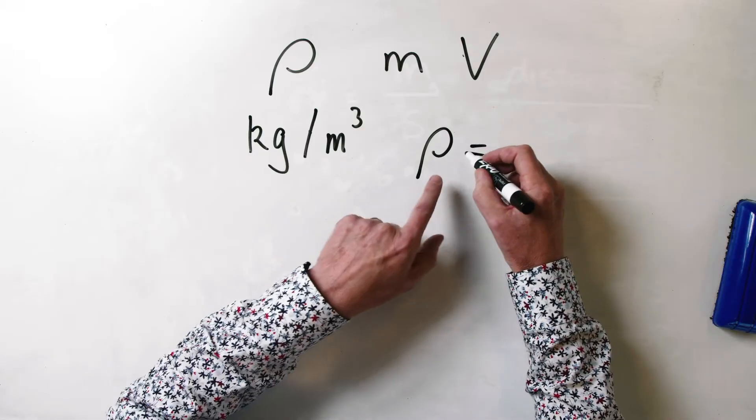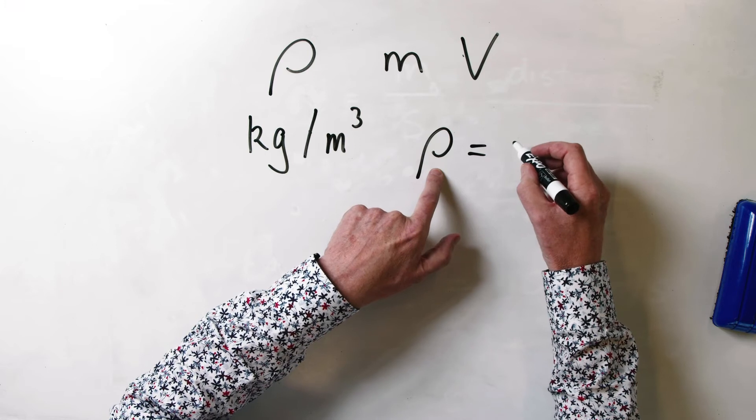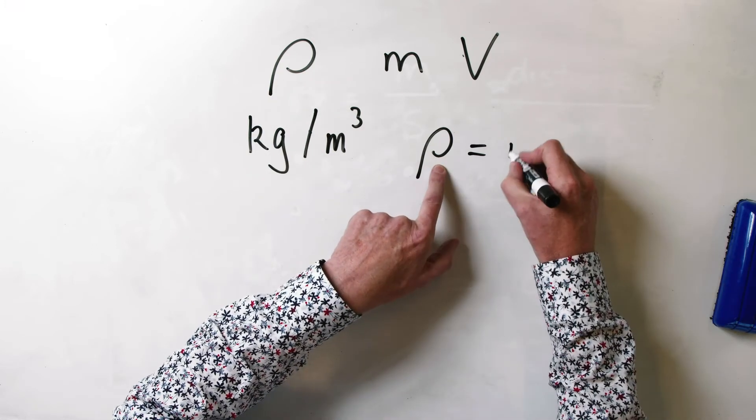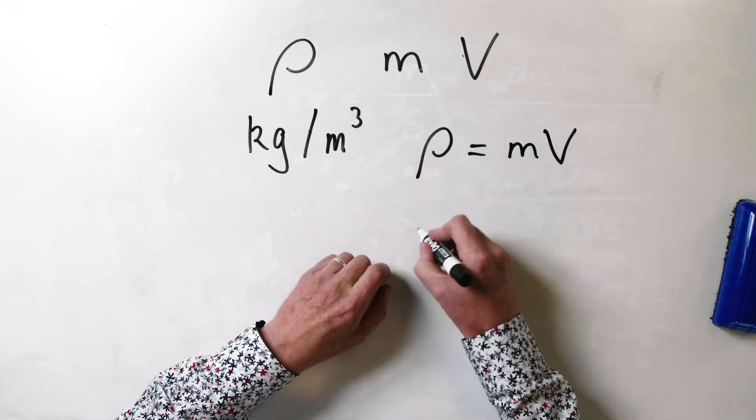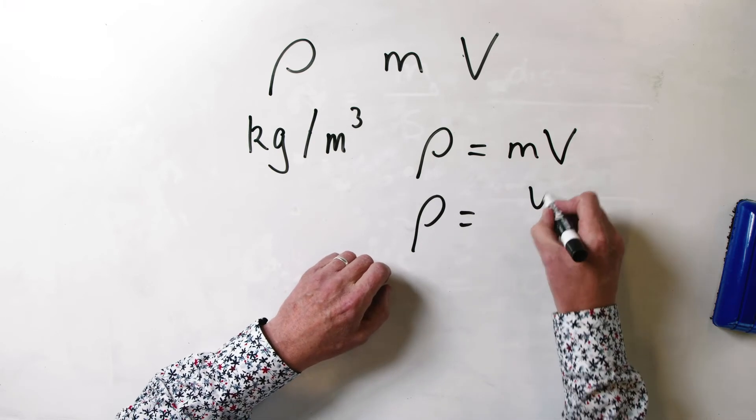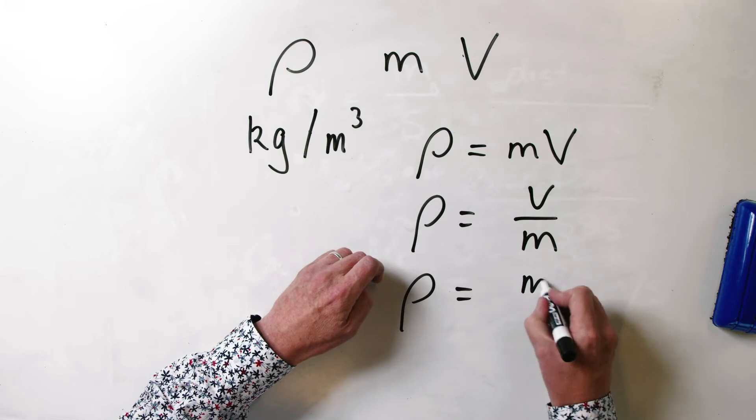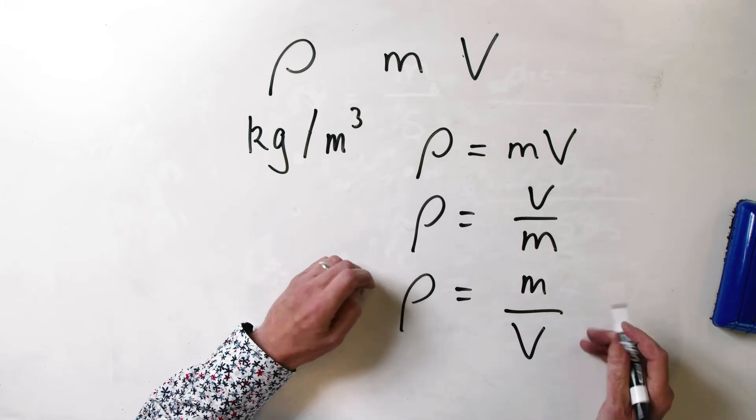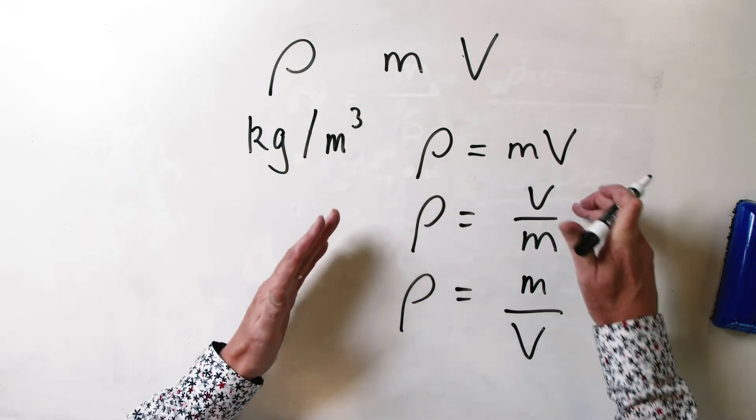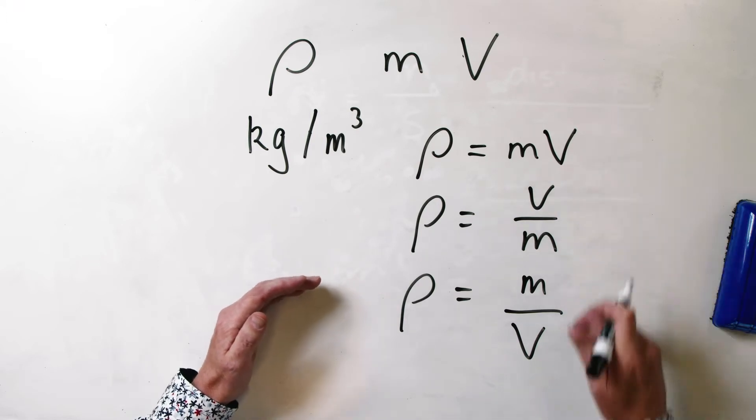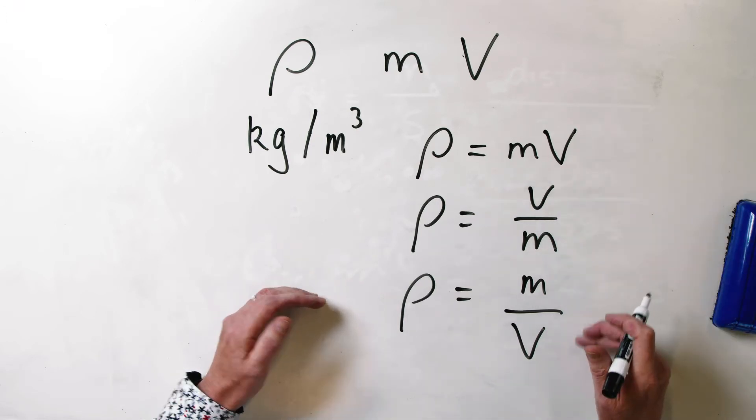If you think about it, there are three possible ways of going about this. We could say that possibly density is equal to mass times volume, or we could say that density is equal to volume over mass, or we could say that density is equal to mass divided by volume. Those are the only three ways that you can put mass and volume together in order to get this equation.